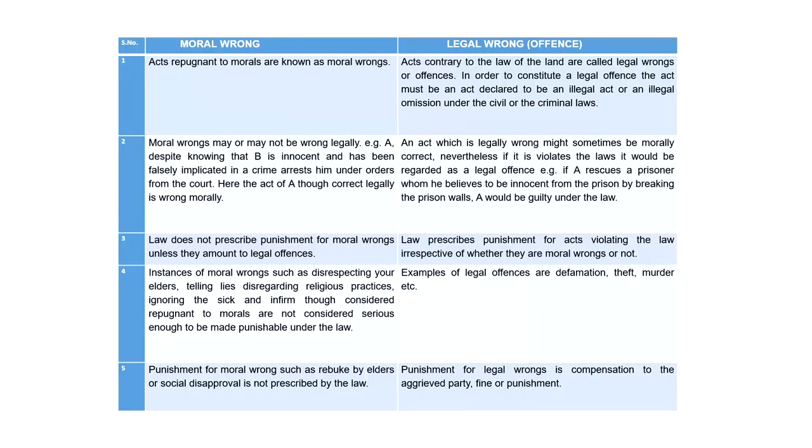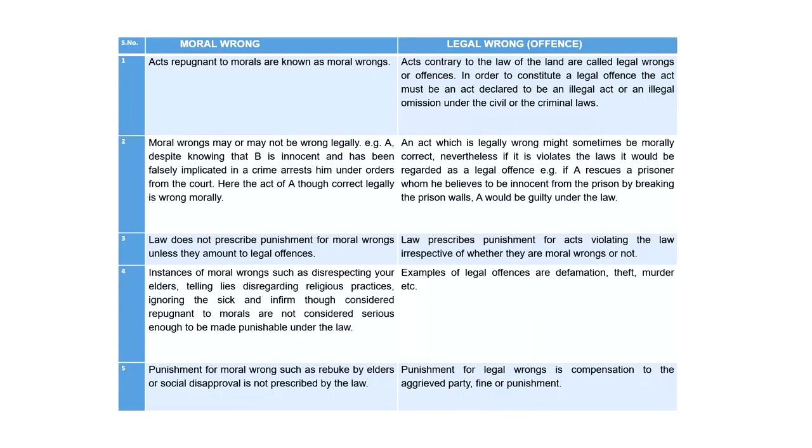If we talk about legal offenses, examples include defamation, theft, and murder — all these are legal offenses. The punishment for a moral wrong could be a rebuke from elders or social disapproval, but nothing prescribed by law. Whereas when you commit a legal wrong, you might be asked to compensate the aggrieved party, pay a fine to the state, or in extreme cases be sentenced to imprisonment.